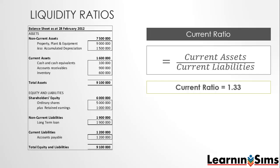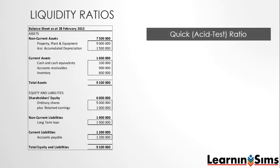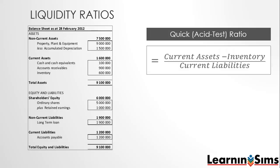The final liquidity ratio is the quick ratio, also called the acid test ratio. It is similar to the current ratio except that it excludes inventory, which is generally the least liquid current asset. By eliminating inventory from the ratio, you remove the risk of the inventory not being sold or being sold on credit, which would hurt your liquidity.